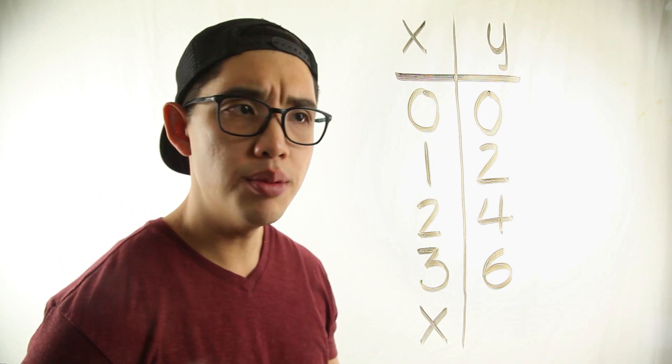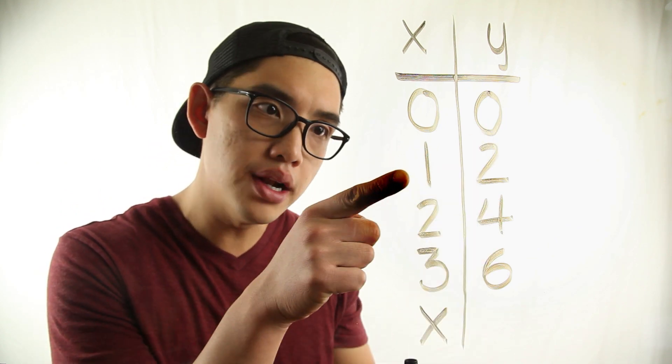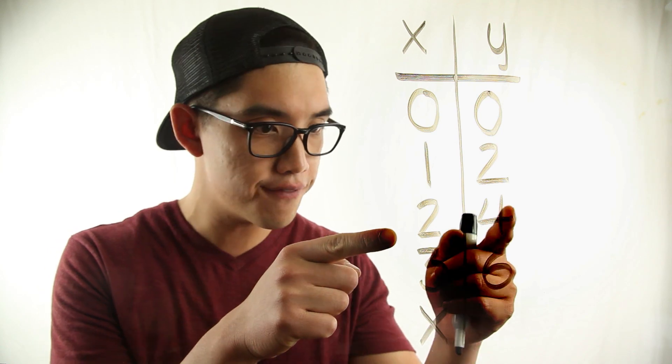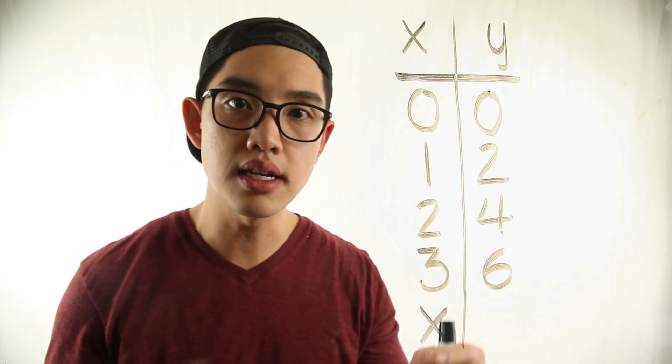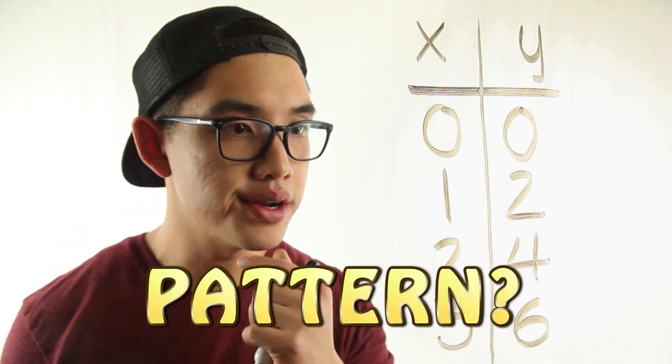Over here I have a function table and I see that whenever I put in a zero I get zero. Whenever I put in a one I get two. Whenever I put in a two I get four. Whenever I put in a three I get six. What is the pattern here?